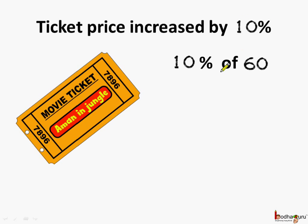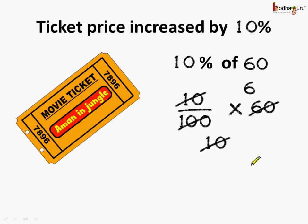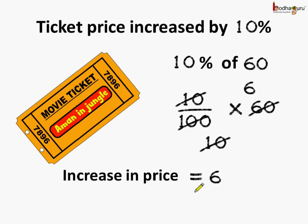10% of 60 means 10 by 100 multiplied by 60. Now 10 tens are 100, and 10 sixes are 60. So the increase in price is equal to 6 rupees.